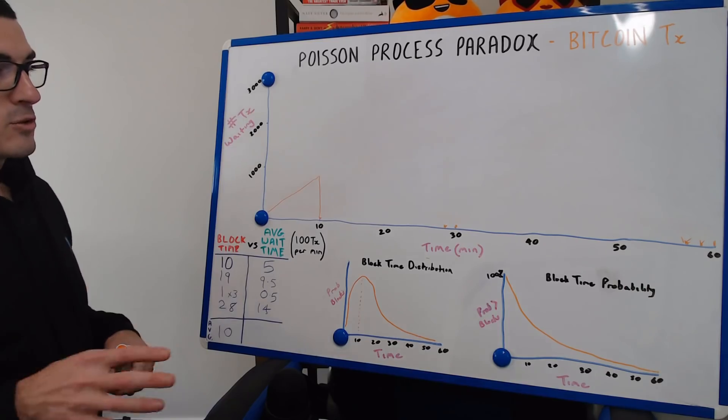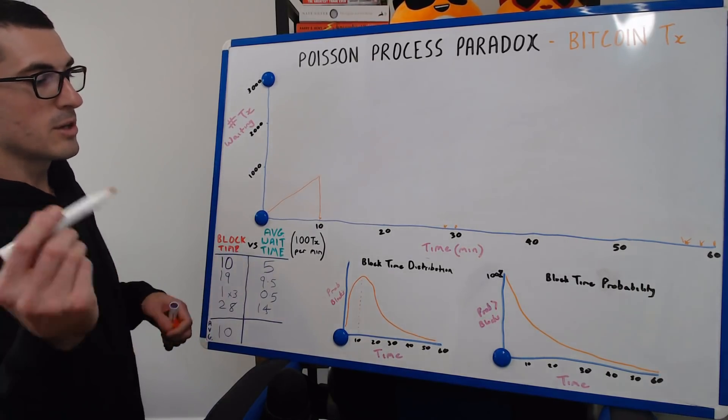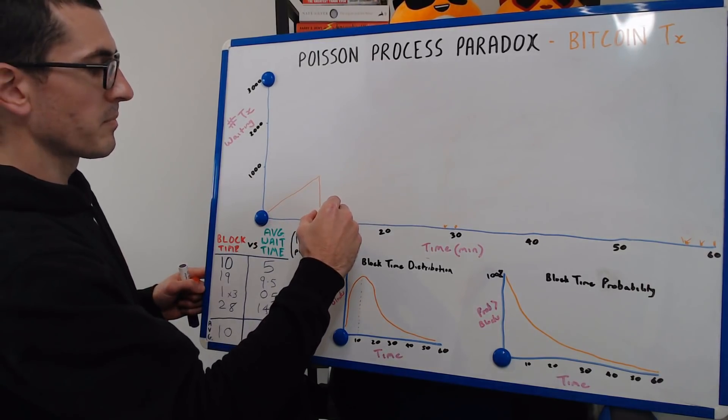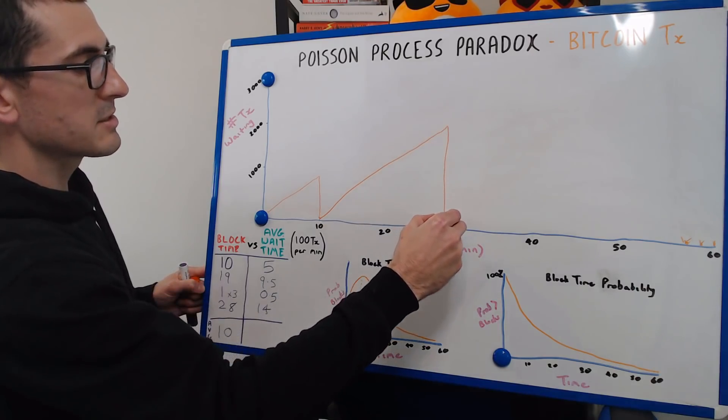So when we look at the number of transactions that were actually included in those blocks, we know that it's increasing at 100 transactions a minute. So after 19 minutes, we had 1,900 transactions in that block.